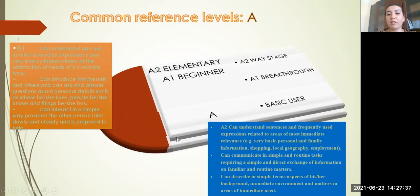A2 level learner which is considered to be waystage and overall a basic user can understand sentences and frequently used expressions related to areas of most immediate relevance: very basic personal and family information, shopping, local geography, employment. Can communicate in a simple and routine task requiring a simple and direct exchange of information on familiar and routine matters. Can describe in simple terms aspects of his own background, immediate environment and matters in areas of immediate need.